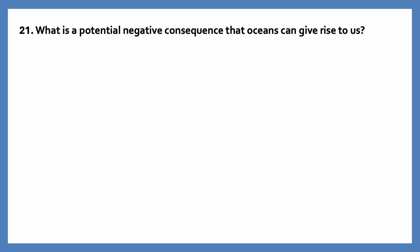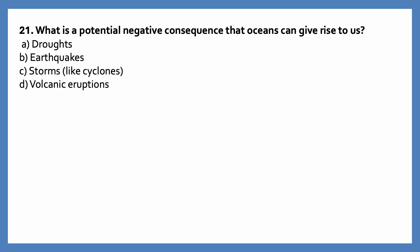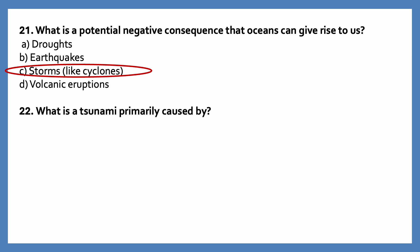What is a potential negative consequence that oceans can give rise to? Options are: droughts, earthquakes, storms like cyclones, volcanic eruptions. The correct answer is storms like cyclones.